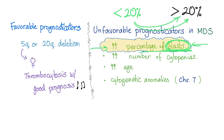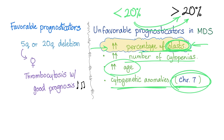Also, increased number of cytopenias — like anemia, thrombocytopenia, leukopenia. The more the cytopenias, the worse the prognosis. Increased age, of course. And cytogenetic abnormalities with chromosome 7.